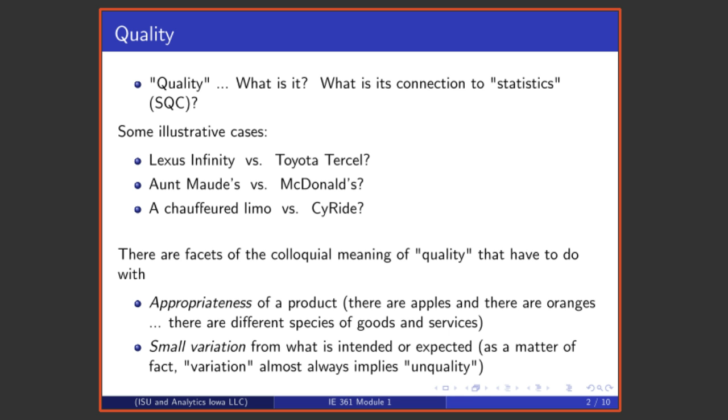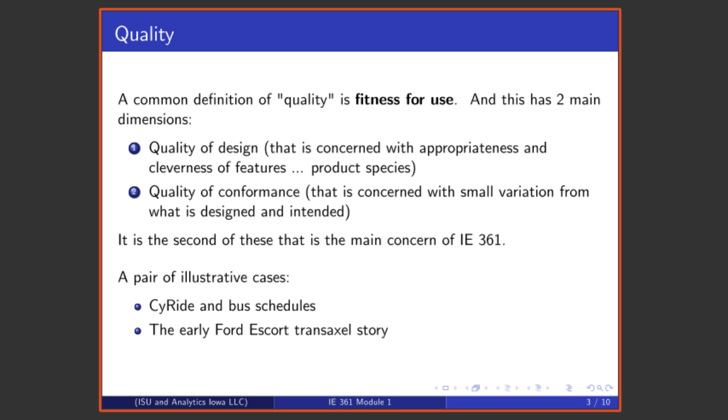And there's also the facet of the word quality that has to do with getting what one expects. That is, having small variation from what is intended or expected. We'll find as we go along in this series of lectures that variation is almost always synonymous or close to lack of quality. So you'll hear me say things like variation is unquality. A common definition of quality is fitness for use, and that has these two main dimensions.